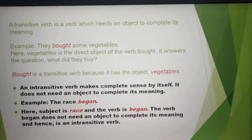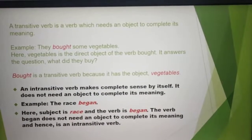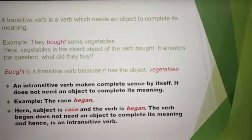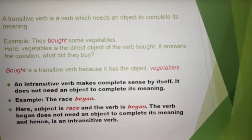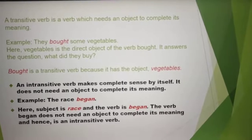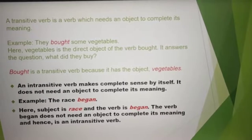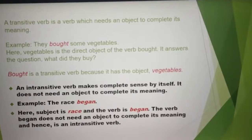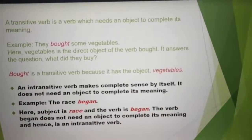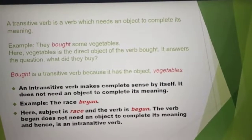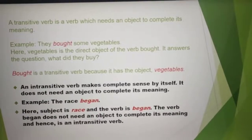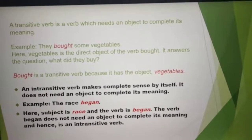An intransitive verb makes complete sense by itself. It does not need an object to complete its meaning. For example, 'the race began.' Here, the subject is 'race' and the verb is 'began.' The verb 'began' does not need an object to complete its meaning, and hence it is an intransitive verb.